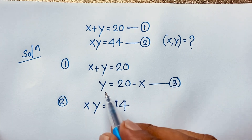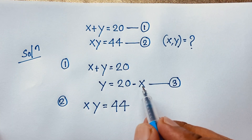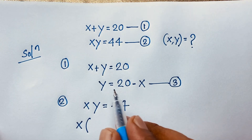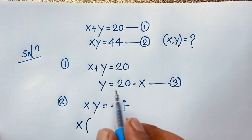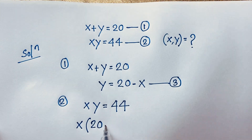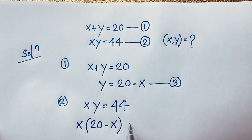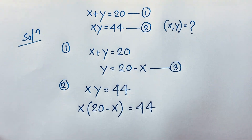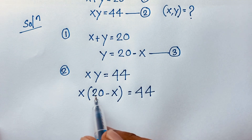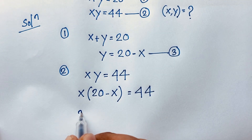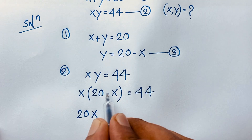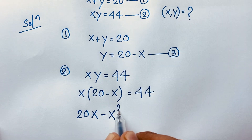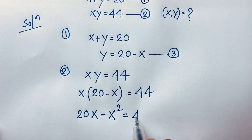Since y is equal to 20 minus x, we substitute into the second equation: x times (20 minus x) is equal to 44. Expanding, we get 20x minus x squared is equal to 44.